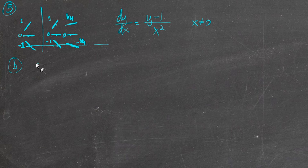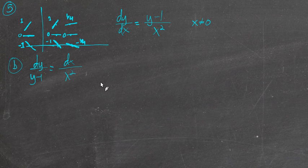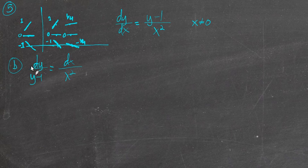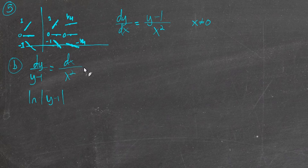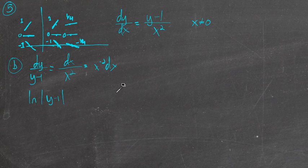To figure out what that function is, we do what's called separating the variables, which is getting the x's and dx's on one side, and the y's and dy's on the other side. It's not going to take much to separate these variables. On this side, we have dy over (y minus 1), which is of the form du/u. We have a function in the denominator and its derivative in the numerator, so that gives us the natural log of y minus 1.